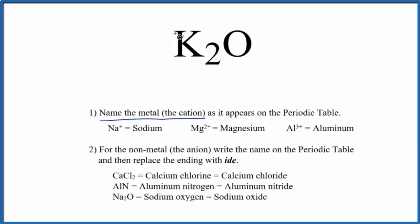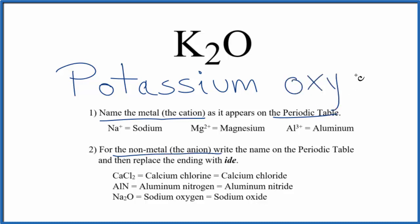We'll write the name for the metal, potassium, just as it appears on the periodic table. Then we write the name for the non-metal, oxygen, and replace the ending with ide. So we replace the ygen with ide. And this is the name for K2O: potassium oxide.